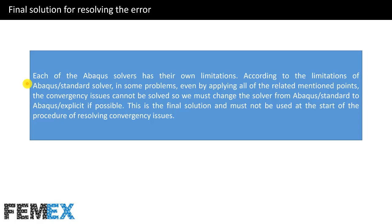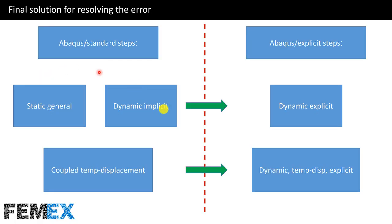Now I want to talk about the final solution for resolving the error. Each Abaqus solver has its own limitations. In some problems, even by applying all of the mentioned settings, convergency issues cannot be solved. So we must change the solver from Abaqus standard to Abaqus explicit if possible. This is the final solution and must not be used at the start of the resolution procedure. If you are using a static general step or dynamic implicit step and facing convergency issues, change to a dynamic explicit step. If using a coupled temp-displacement step, use the dynamic temp-displacement explicit step.